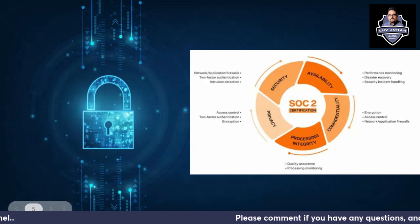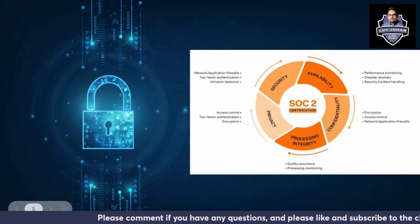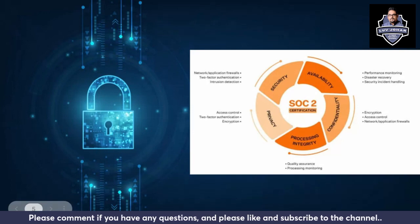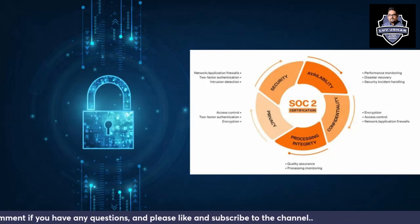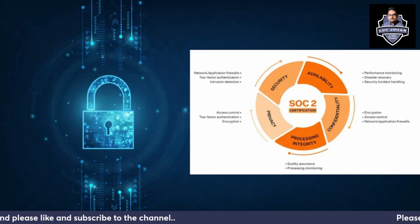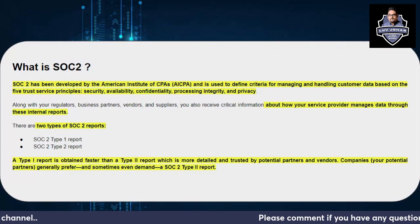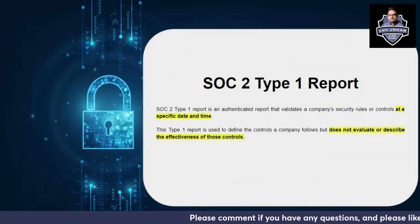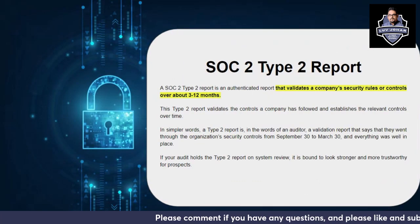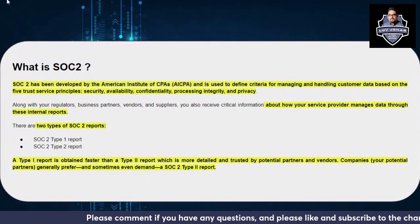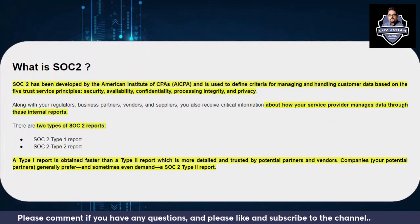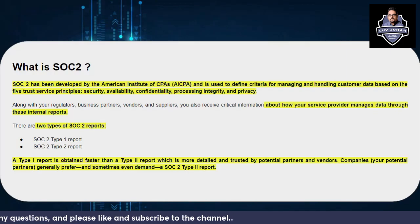Tomorrow we will discuss the controls under each of the Trust Services Criteria — Security, Privacy, Processing Integrity, Confidentiality, and Availability — and also what is SOC 2 Type 1 report and SOC 2 Type 2 report. Until then, please feel free to ask any questions, and please like and share the video. Thank you so much for watching — take care, bye!